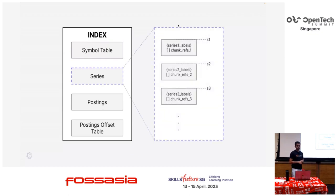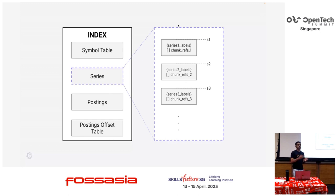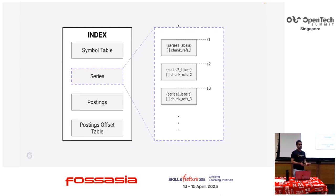Now the series itself — it stores the labels that pertain to this particular series. Instead of storing the string itself, it uses the symbol table index to store which labels are for this particular series. And then a slice of chunk references — we saw earlier that a chunk reference is just an 8-byte number, but with every chunk we store what is the min time of the chunk, what is the max time of the chunk, and what is the encoding of the chunk, so that we know how to decode it. The series are stored in a sorted fashion based on their label values — sort first based on the first label name and value, then the second label name and value, and so on.